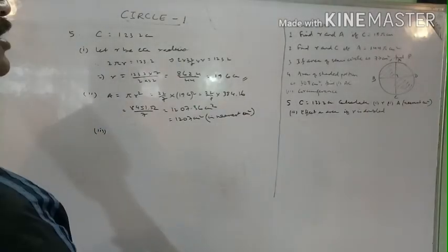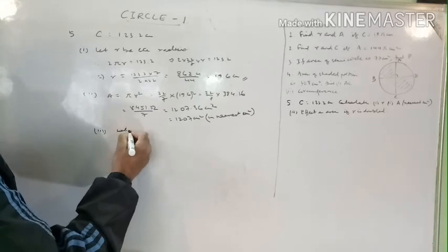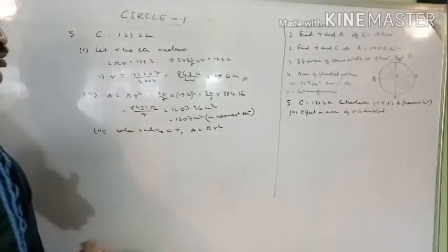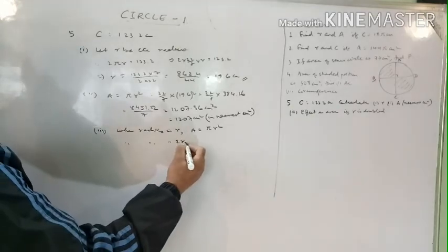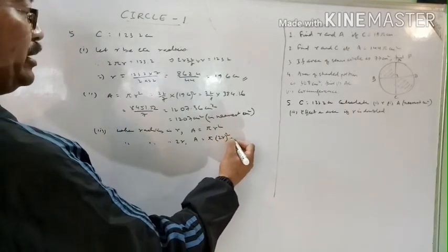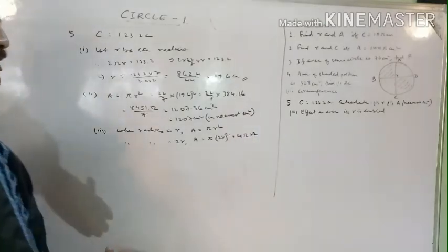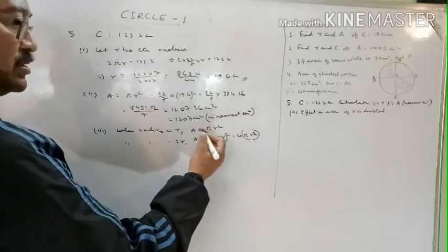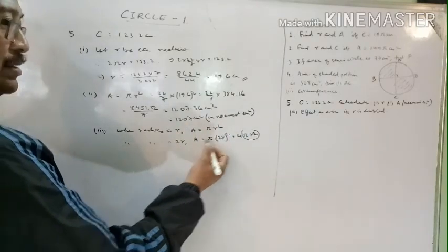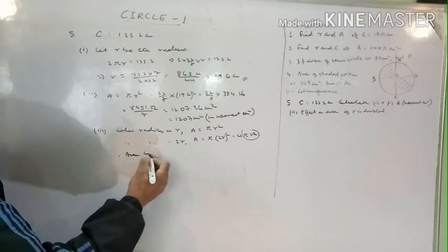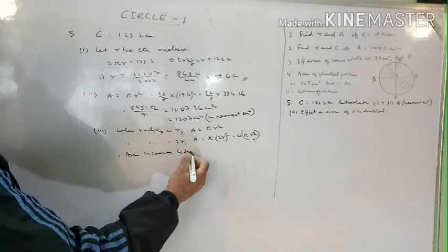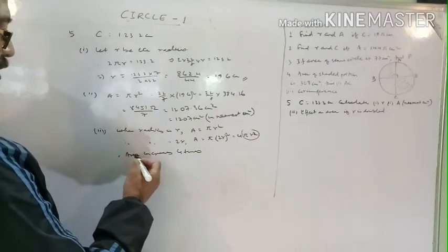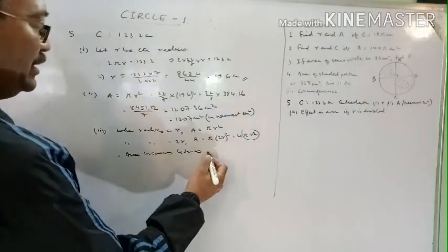Effect on area if radius is doubled: when radius is r, area equals πr². When radius is doubled to 2r, area equals π(2r)² equals 4πr², which is 4 times the original area. Therefore, if you double the radius, the area increases 4 times.